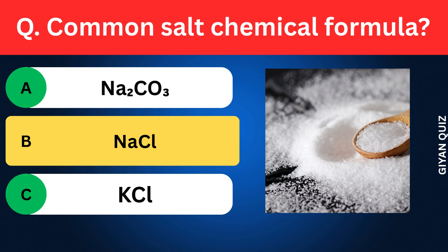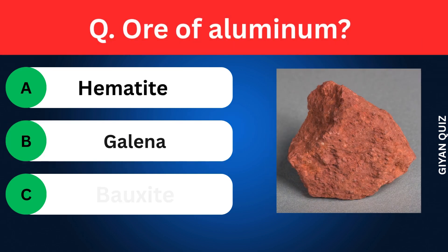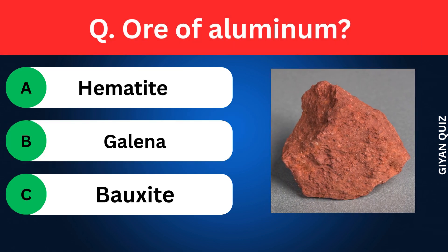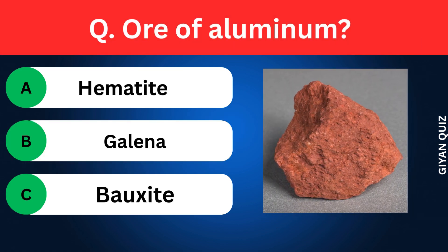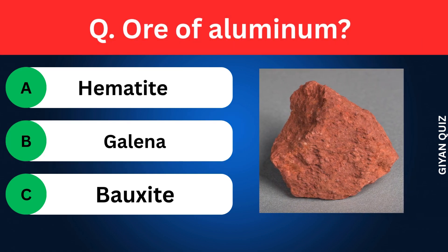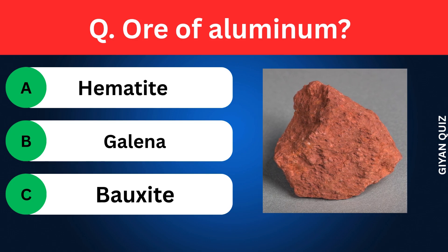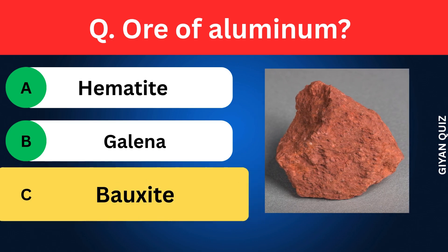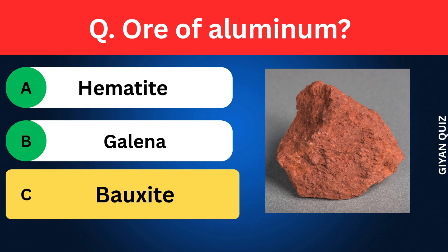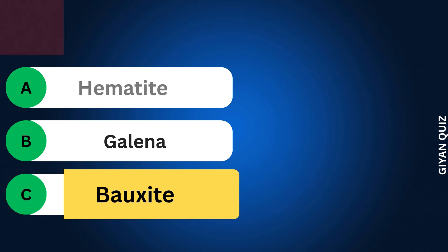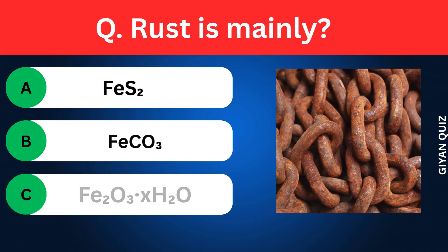Common salt chemical formula? Options: Sodium carbonate, Sodium chloride, Potassium chloride. Correct answer: sodium chloride. Ore of aluminium? Options: Hematite, Galena, Bauxite. Correct answer: bauxite.